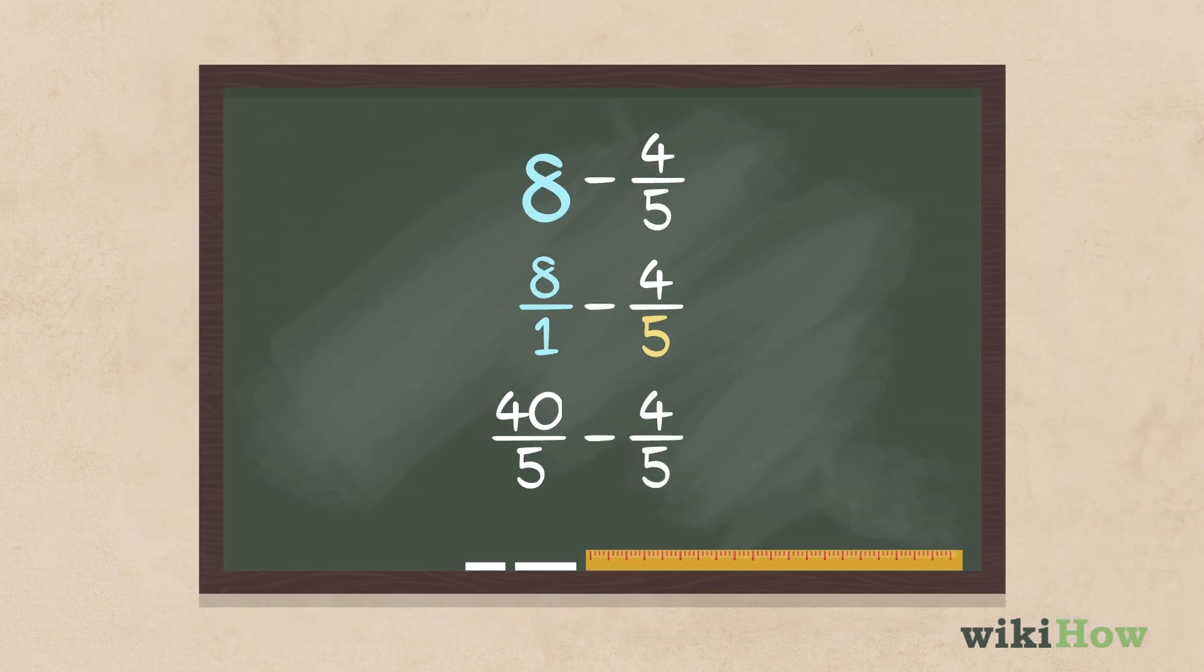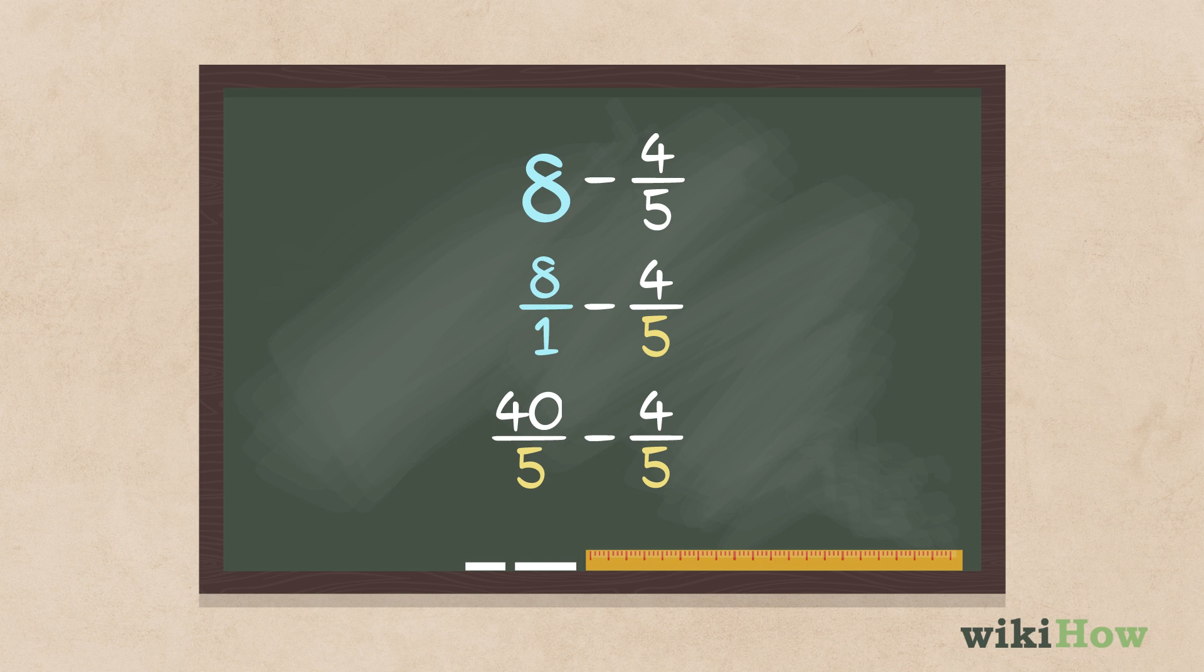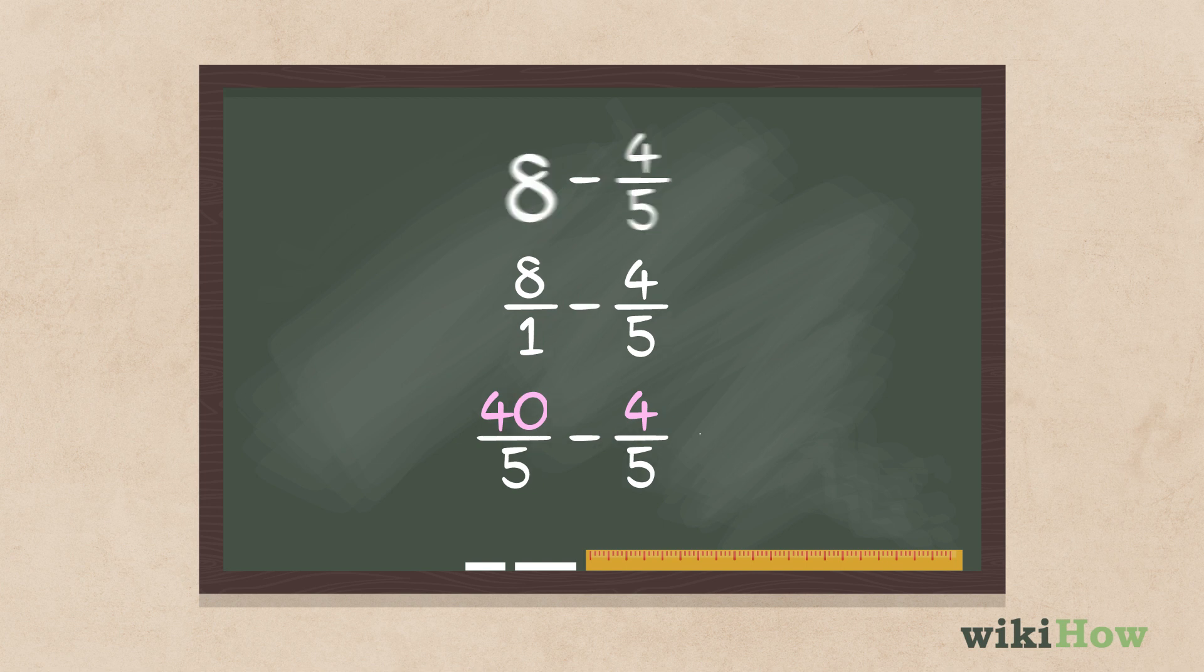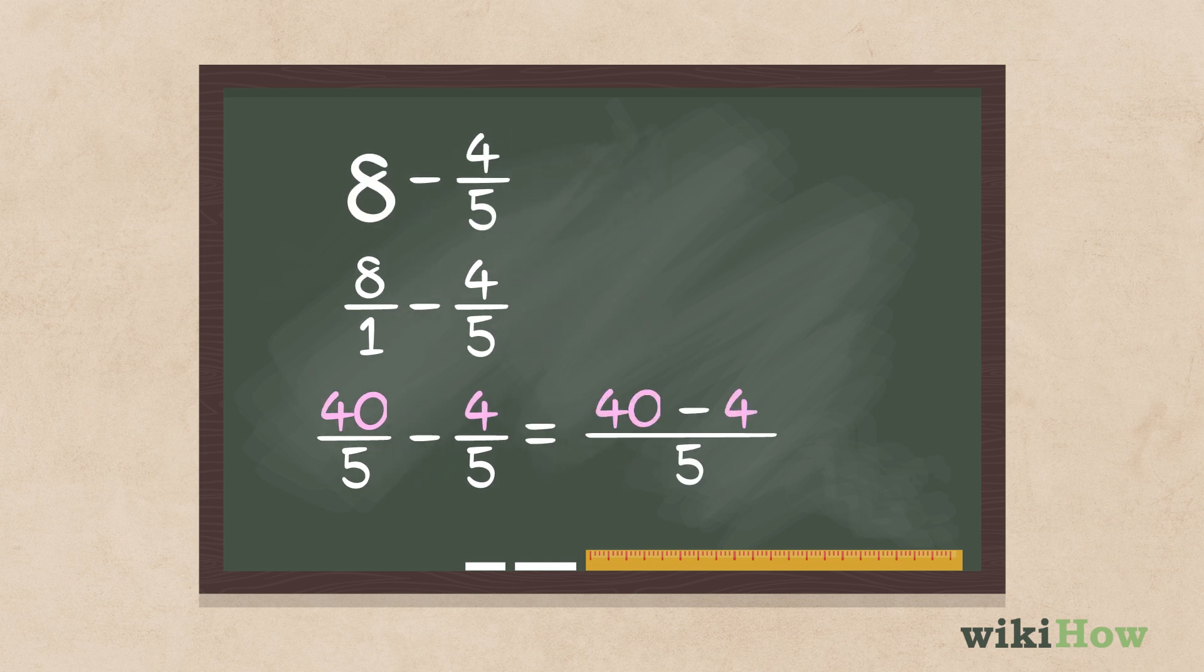Now you have two like fractions, that is, two fractions that share the same denominator. Carry out the subtraction problem using just the numerator of the two fractions. In this example, 40 minus 4 equals 36. Write the difference between the two numerators over the common denominator to get 36 over 5.